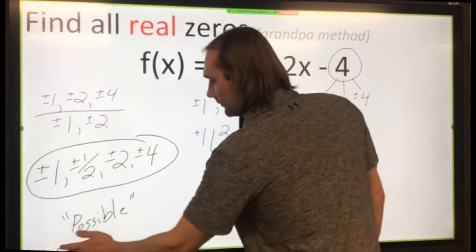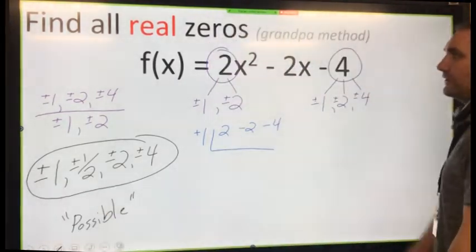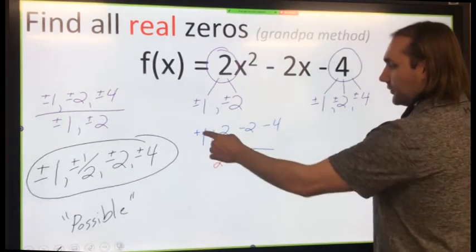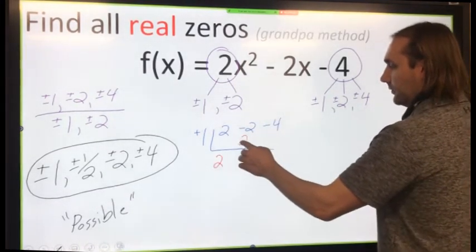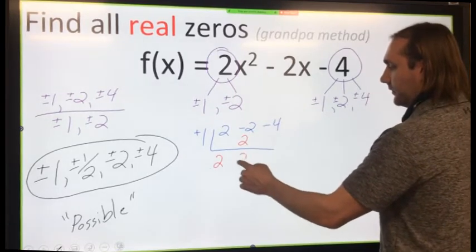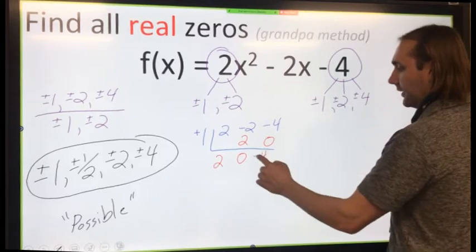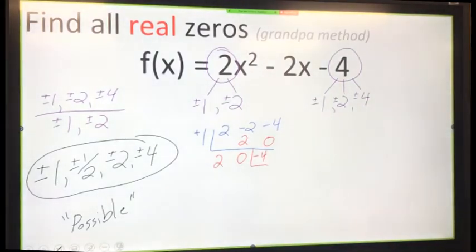So I'm going to see if 1 is a zero. Can we do all the numbers? Yep, 1 by 1 until you get the 2 we need. So, 2 gets dropped down. 2 times 1 is 2. Add, that's 0. 1 times 0 is 0. Add is -4.